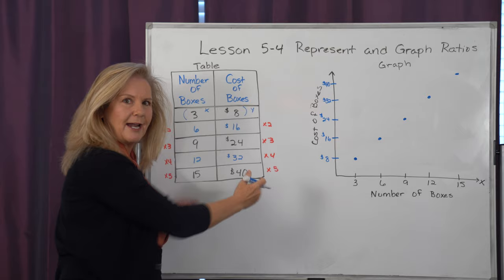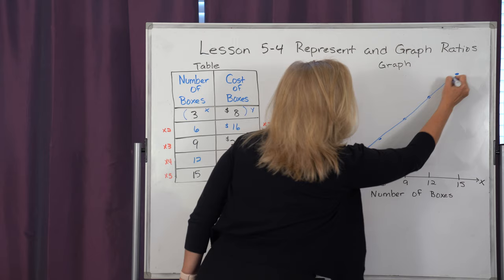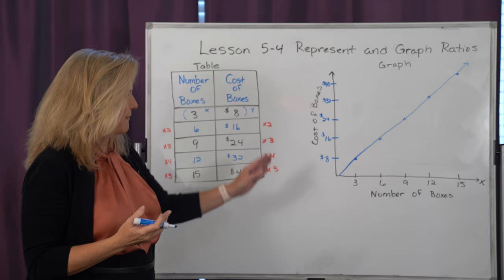So those ordered pairs give me that location on the graph. Now what we can do is draw a line connecting all those dots. And that gives me an infinite number of solutions for finding the number of boxes compared to the cost.